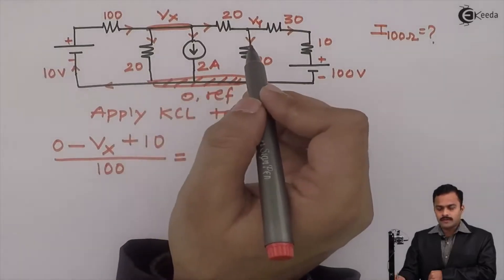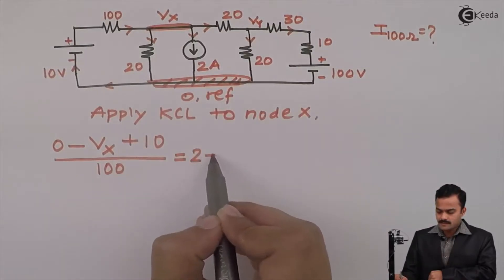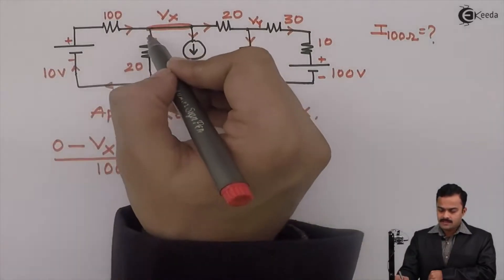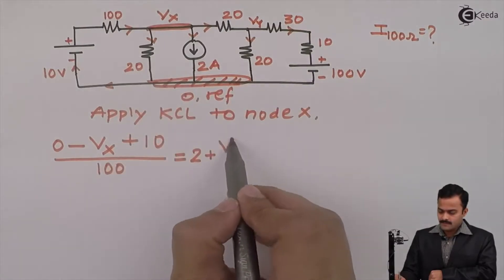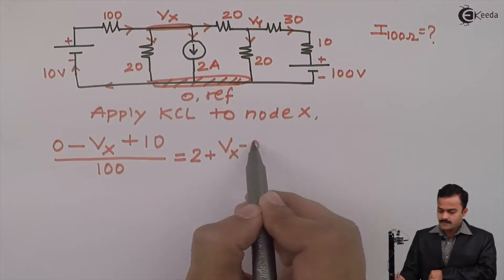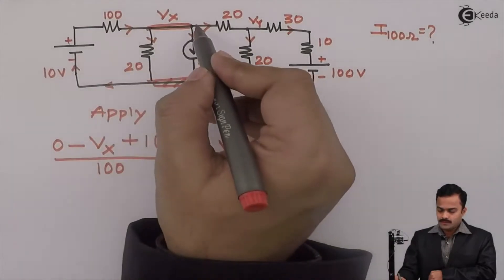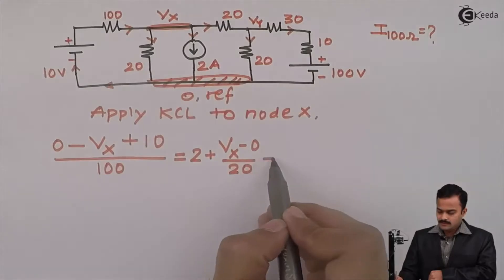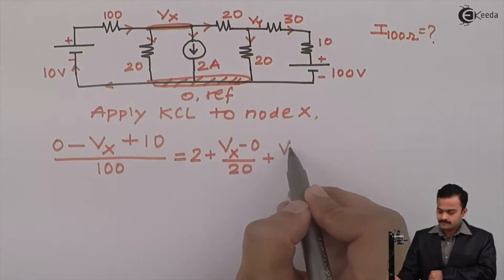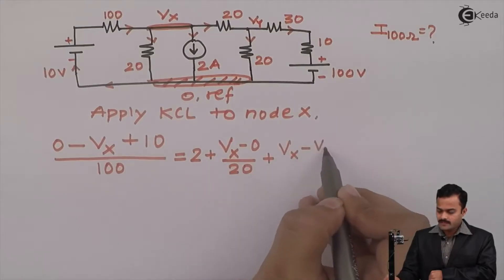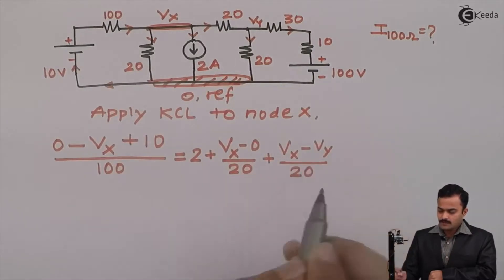Equal to all outgoing currents. So I will consider 2A first as it is, plus this current started at X ending on reference. So Vx minus 0 divided by resistance is 20. This current started at X ending on Y. So Vx minus Vy divided by resistance of this branch, 20.